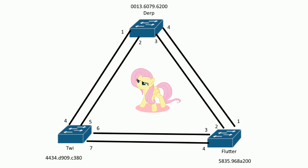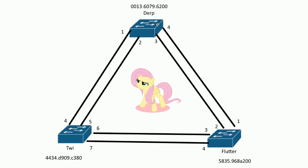If we look at the MAC addresses here, we'll find that derp has the lowest one because it starts with a zero. This has zero, this has four, and this has five. Left to right we compare the hexadecimal digits, and whoever has the lowest one as we go across wins. And that becomes the root bridge — so derp becomes the root bridge.